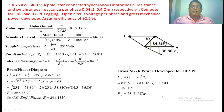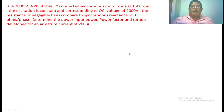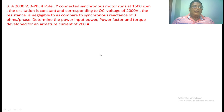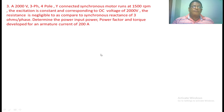Remaining losses are neglected; we only considered the copper loss. Now come to the third numerical. A 2000 V, 3-phase, 4-pole Y-connected synchronous motor runs at 1500 rpm. The excitation is constant, corresponding to an open circuit voltage of 2000 V. The resistance is negligible compared to the synchronous reactance of 3 ohms per phase. Determine the input power, power factor, and torque developed for an armature current of 200 amperes.